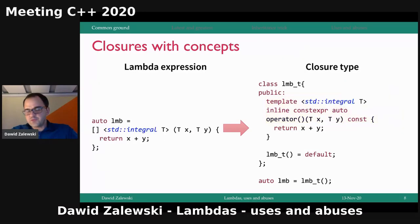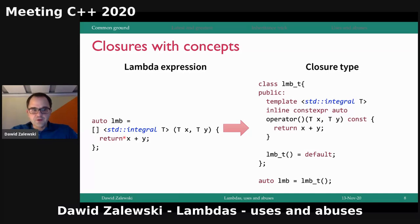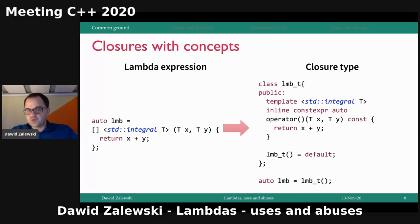In C++20, you are able to specify yourself what kind of template parameters you'd like to take. We got the possibility of specifying template parameters just after the Lambda introducer and before the Lambda parameters. You can also use concepts to constrain your template parameters — for example, constraining to std::integral — and this will be reflected in the closure type generated by the compiler.